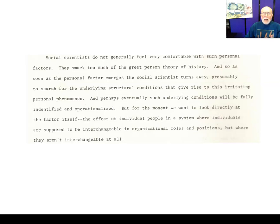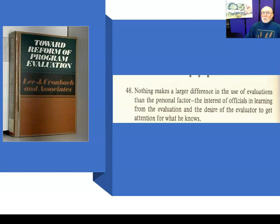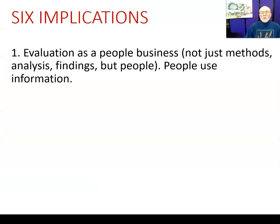This finding was significant enough that it generated our interest in reporting those findings and led to the Utilization-Focused Evaluation book. In 1980, Lee J. Cronbach, who directed the Stanford Evaluation Program, and his doctoral students and postdocs put together a book called Toward Reform of Program Evaluation — a tremendous book — in which they posited, like Martin Luther, 99 manifesto conditions for reforming evaluation. Number 48, citing our work, was: nothing makes a bigger difference in the use of evaluations than the personal factor — the interest of officials in learning from the evaluation and the desire of the evaluator to get attention for what he or she knows.